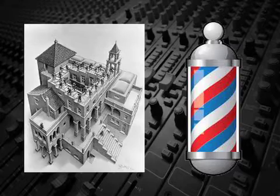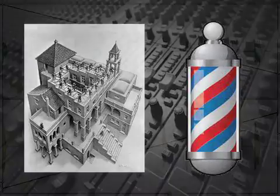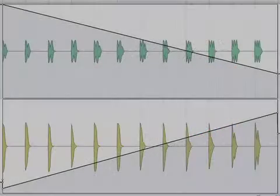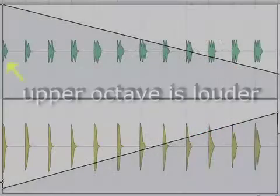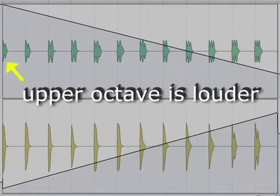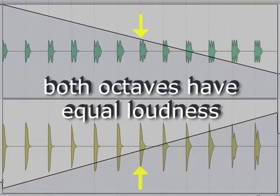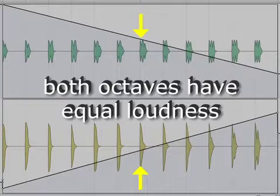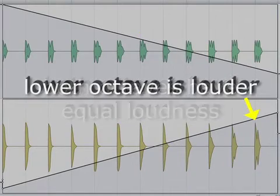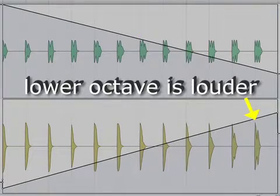In ascending Shepard tones, the notes are arranged this way. In the first pair of the series, the highest note of the pair is the loudest. Toward the middle of the series, both octaves are equally loud. Near the end of the series, the lowest note of the octave pair is the loudest.